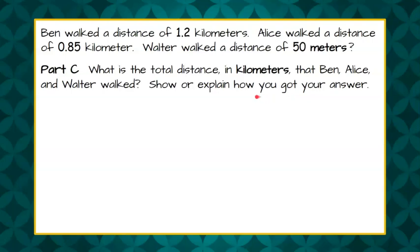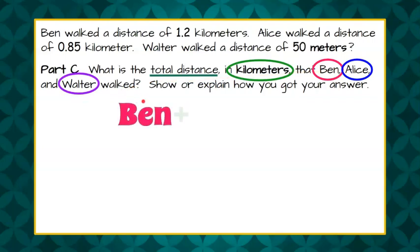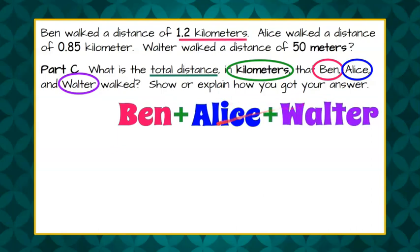Welcome back. So we know that we're finding the total distance and be careful, this time they're telling us to do this in kilometers. So in the previous two parts, we took kilometers and converted it to meters. We don't want to do that here. So we know that we're doing Ben, Alice, and Walter, the total distance all three together. So we're going to find the distance in kilometers for Ben and add Alice in kilometers and add Walter in kilometers.